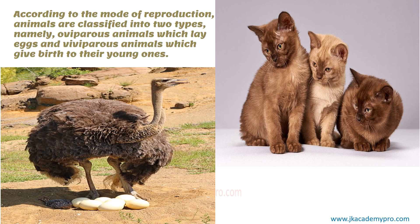According to how they reproduce — that is, the mode of reproduction — animals can be classified into two types: namely oviparous and viviparous. Oviparous animals are those which lay eggs. All birds, all reptiles lay eggs and don't give birth to young ones directly — such animals are called oviparous. Whereas animals that give birth directly to young ones, like the dog, the cat, the elephant, and the cow, are called viviparous.